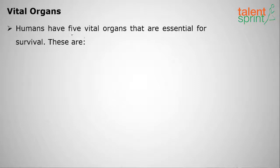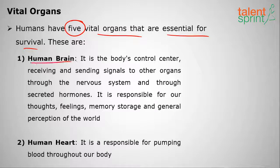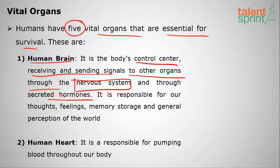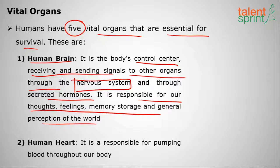Humans have five vital organs essential for survival. The first is the brain — the master control center of the human body — which receives and sends signals to other organs through the nervous system and also secretes hormones. It is responsible for our thoughts, feelings, memory, and general perception of the world.